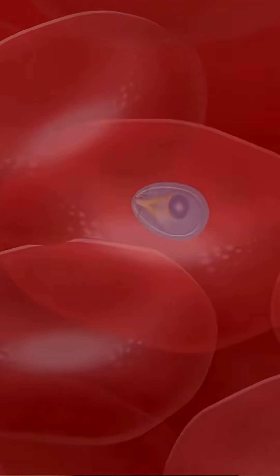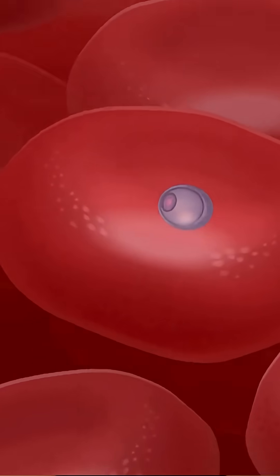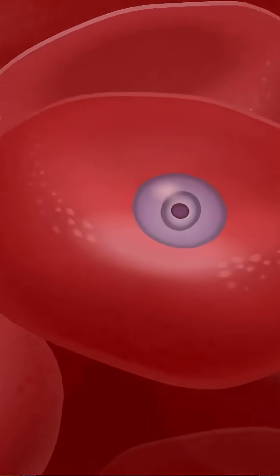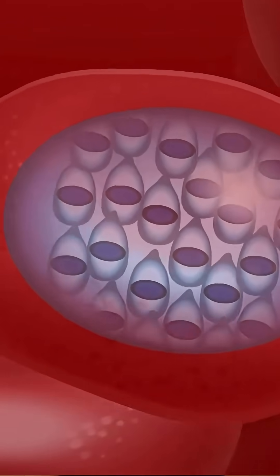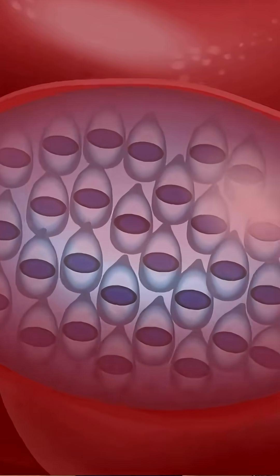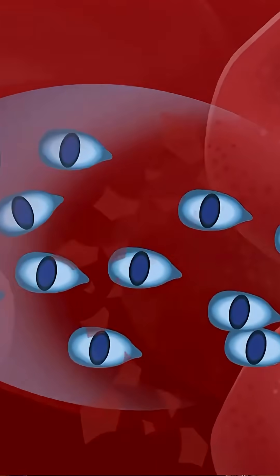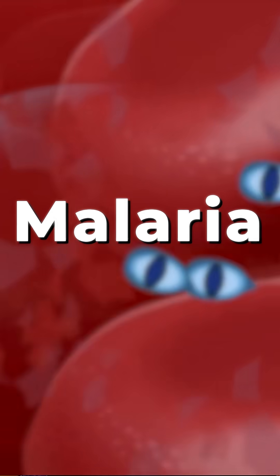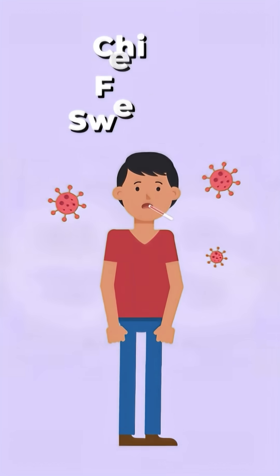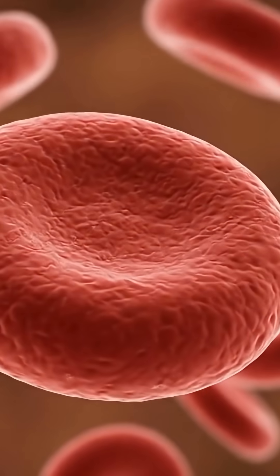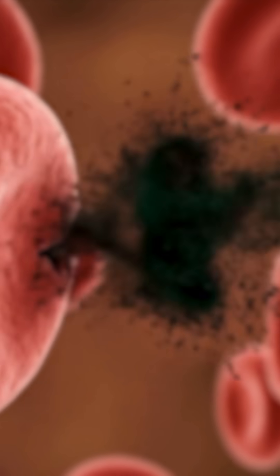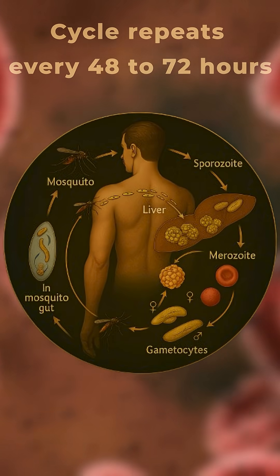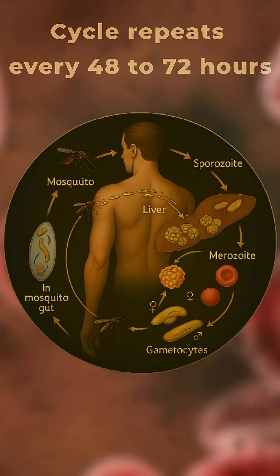Merozoites re-enter the blood and infect red blood cells. Inside RBCs, they multiply again and burst the cell. This bursting causes the symptoms of malaria — chills, fever, and sweating — due to a toxic substance released from the RBC called hemozoin. This cycle repeats every 48 to 72 hours.